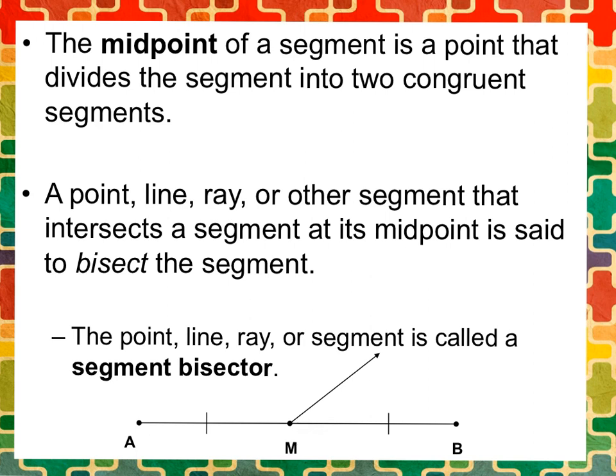This ray is actually bisecting this segment. And AM is going to be congruent to MB. They equal each other. I can actually write that as a statement. AM is equal to MB.